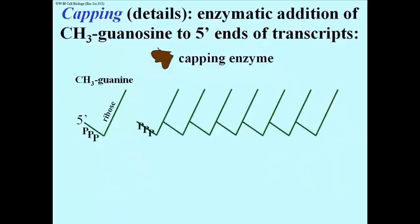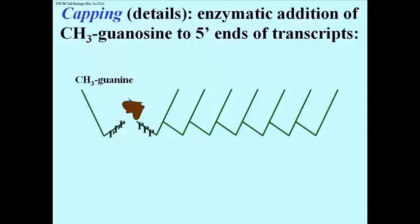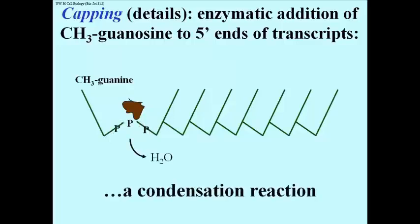Here are some capping details. A capping enzyme brings a methylated guanosine nucleotide and an mRNA molecule head to head, as shown here. The check marks being the nucleotides. The enzyme then catalyzes a condensation reaction to form this phospho-triester linkage.